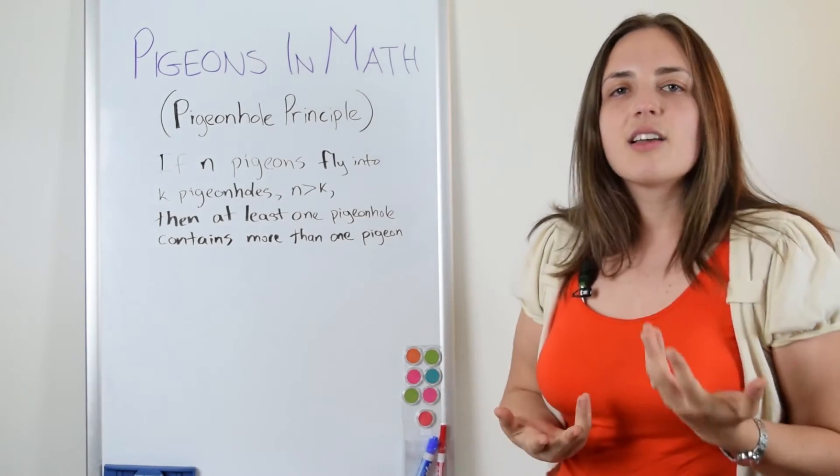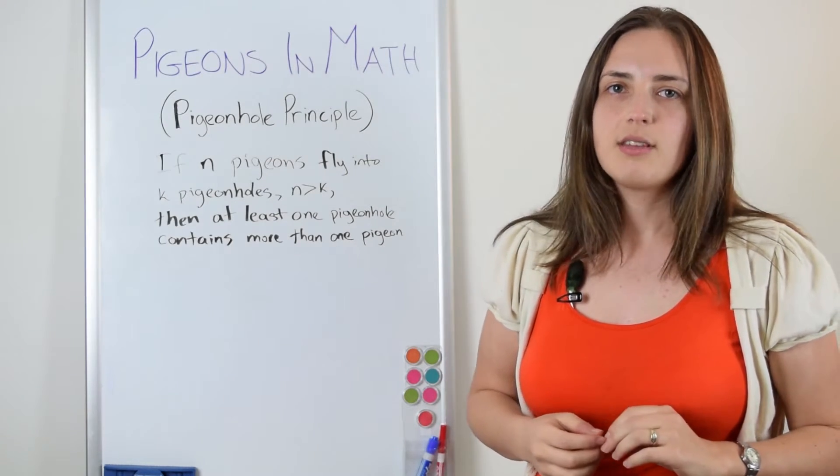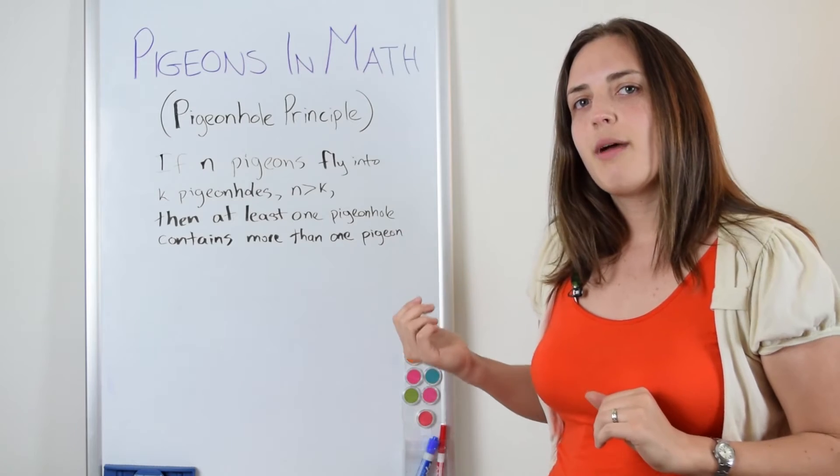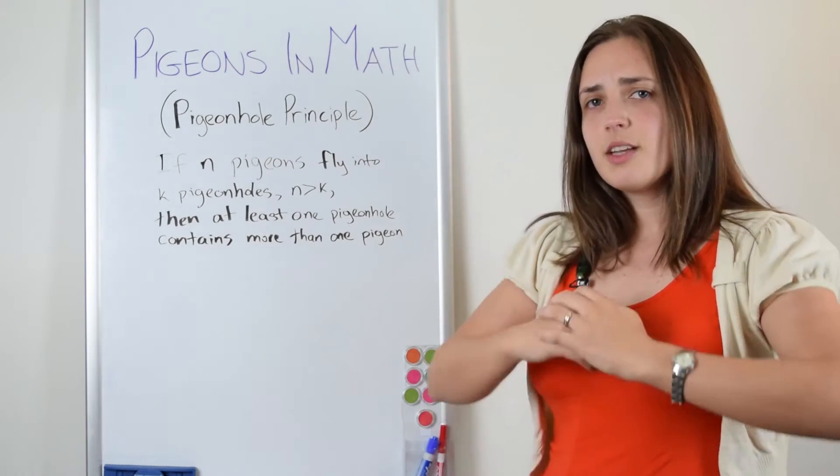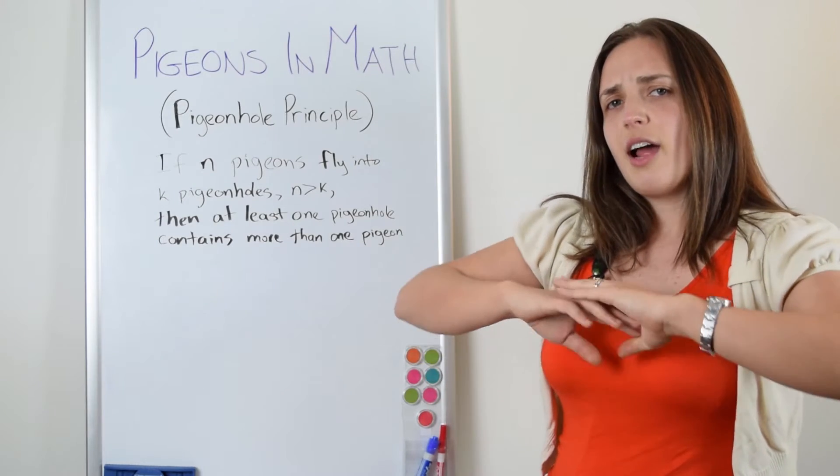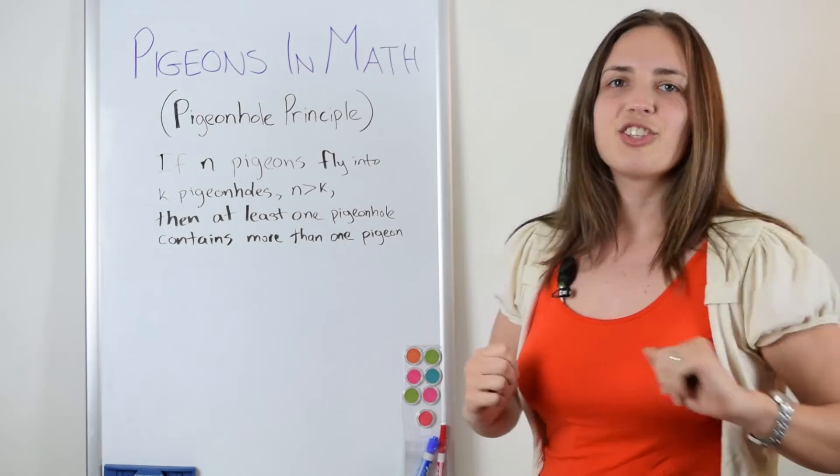Now this has a few different ways of being stated, and there are several more advanced ways. But using just this most simple method, what I want to do is show you a nice example using graph theory. So let's say we have n people in a room. Now you might be thinking, this doesn't sound like graph theory. Aha, just wait a moment.